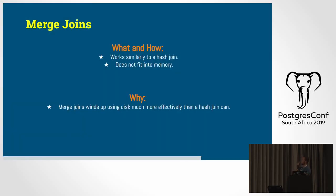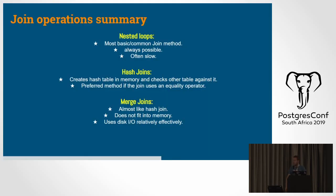So moving on to merge joins. What and how merge joins work. Merge joins work similarly to a hash join. That's all we need to know for this little exercise today. And it does not fit into memory. So why Postgres would use this method is because merge joins winds up using disk much more effectively than a hash join. So it handles the thrashing of the disk a lot better.